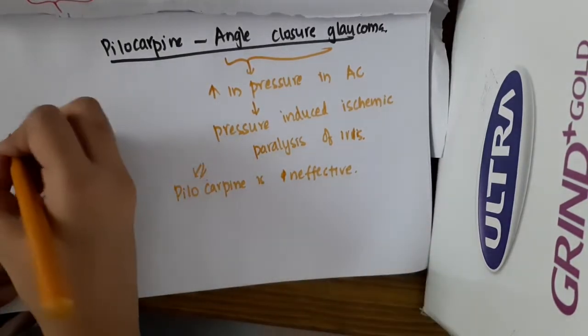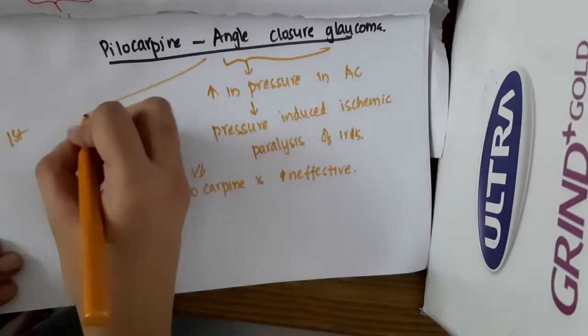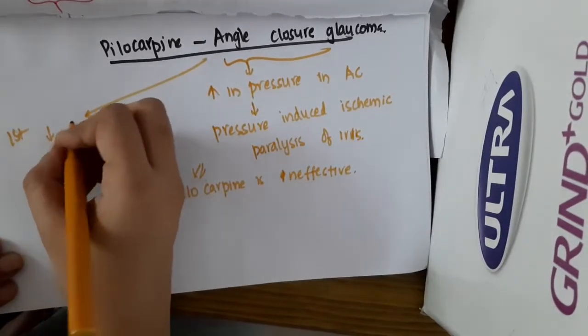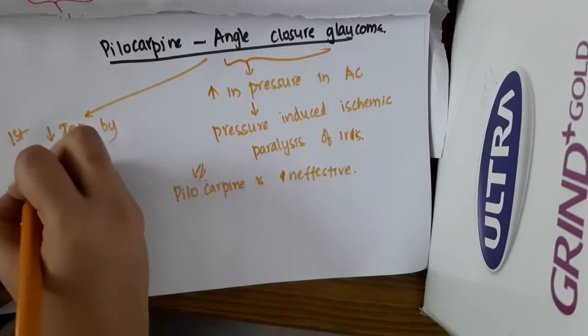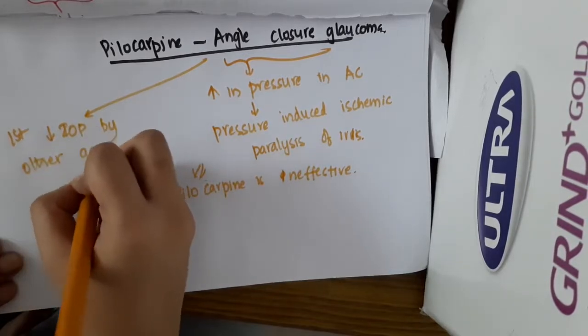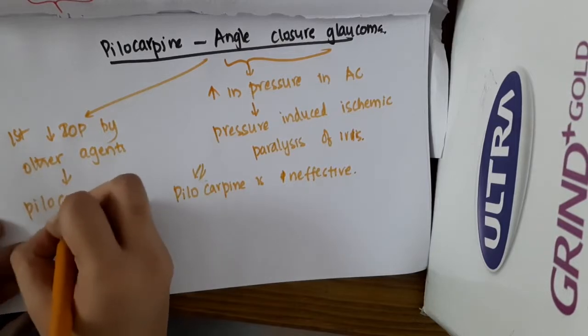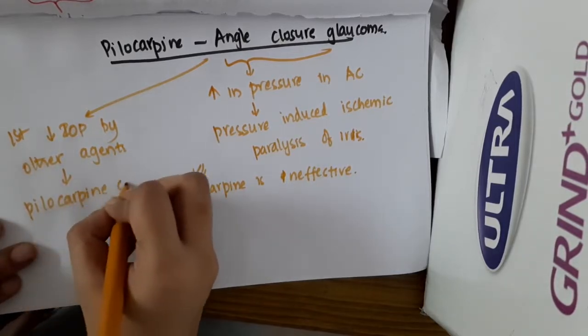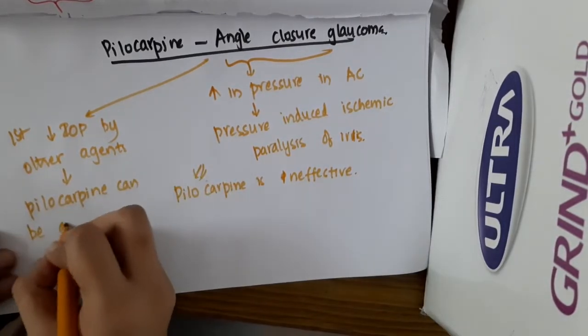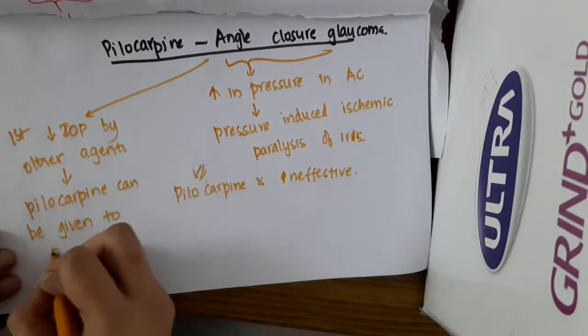So first, in these conditions of angle closure glaucoma, first we should reduce the intraocular pressure by other agents, and then pilocarpine can be given to overcome the pupillary block.